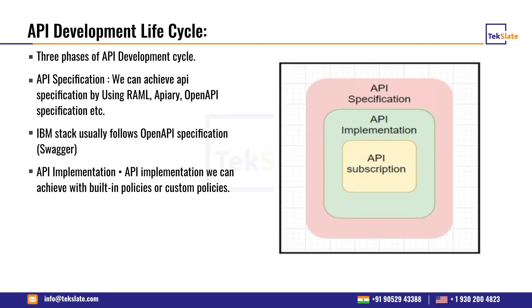If you want to create APIs inside IBM API Connect, you can design REST APIs or SOAP APIs. First, you need to create an API specification — the first step in API development. IBM stack follows the OpenAPI specification (other options include RAML).